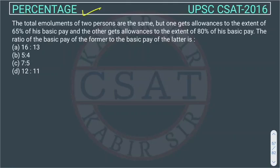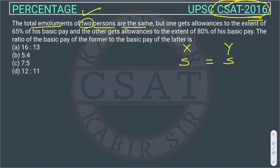This is a percentage question asked in UPSC CSAT 2016. The question states that the total emoluments of two persons are the same. So if there are two persons X and Y, their salary or emolument is the same. The salary includes basic pay plus allowances. One person gets allowances to the extent of 65% of his basic pay.